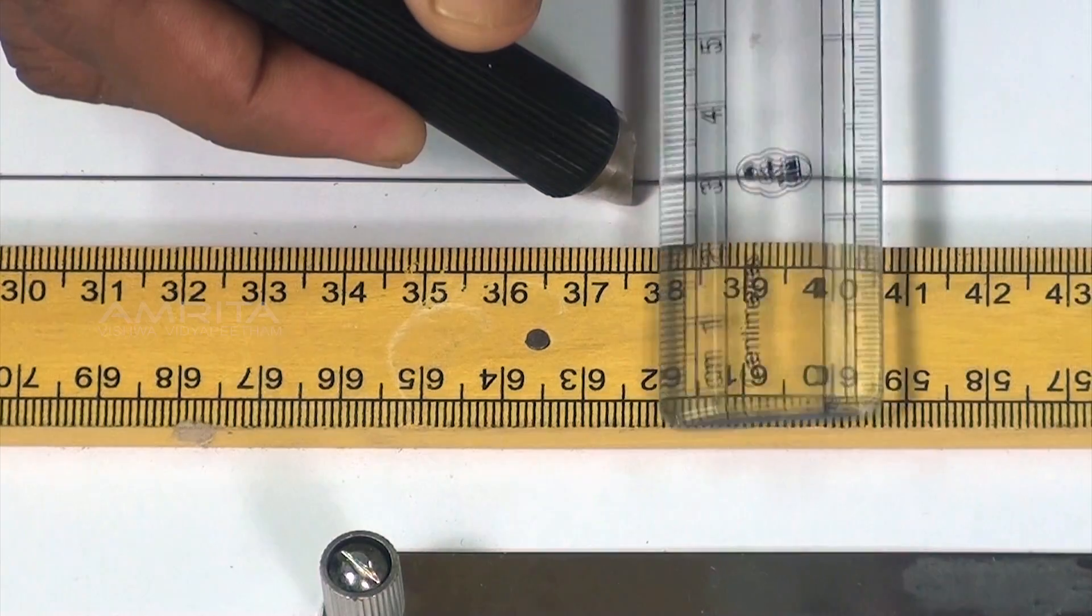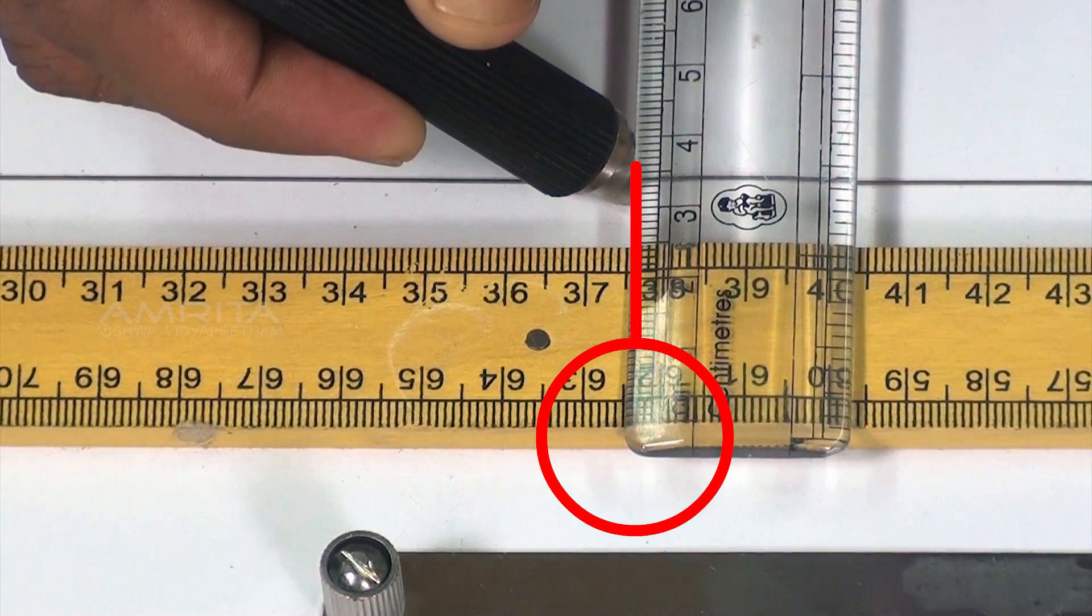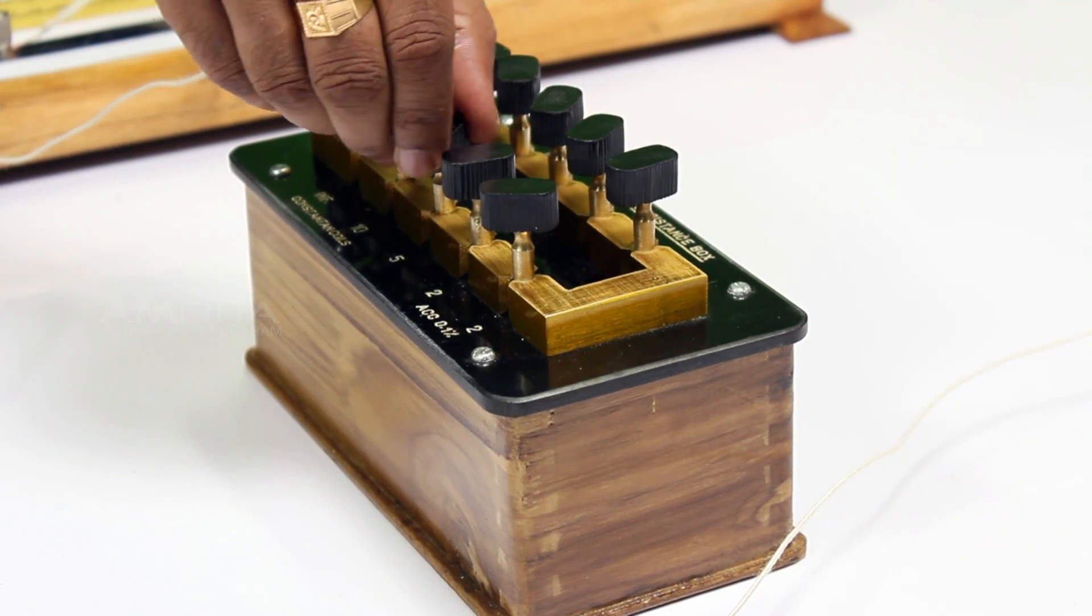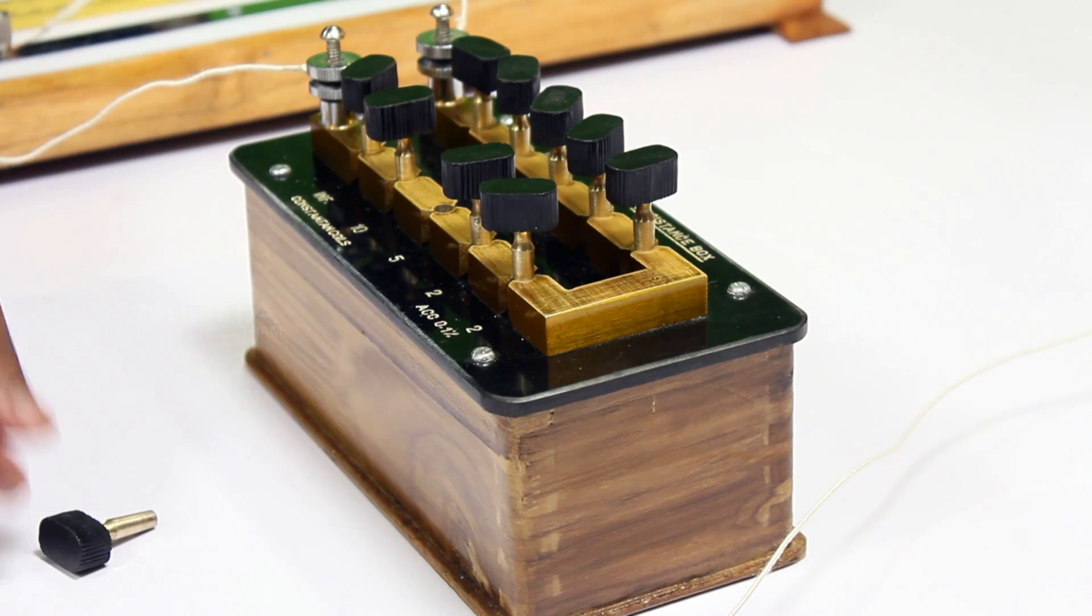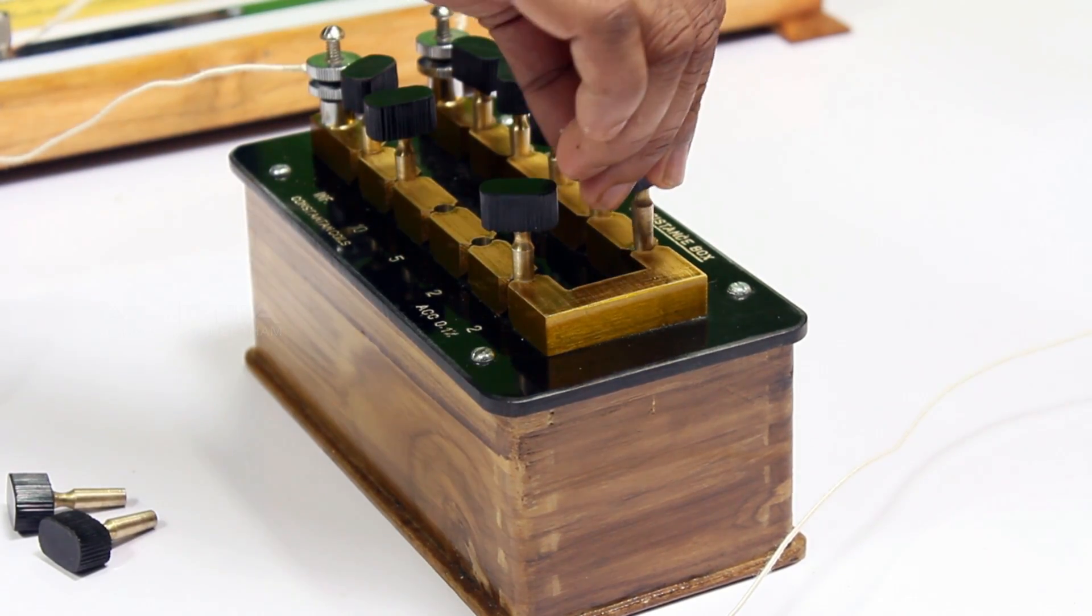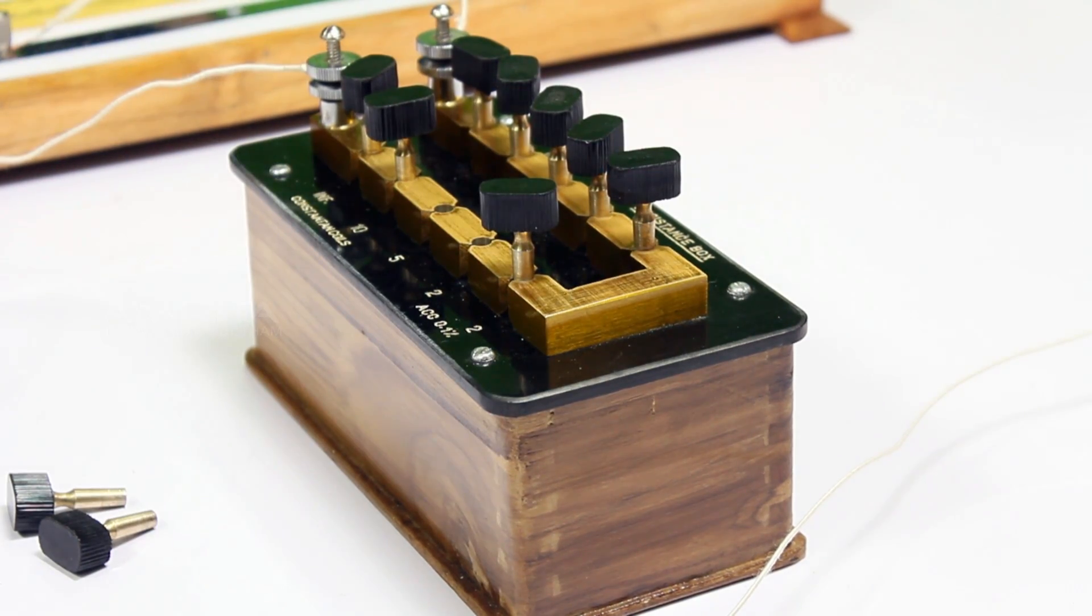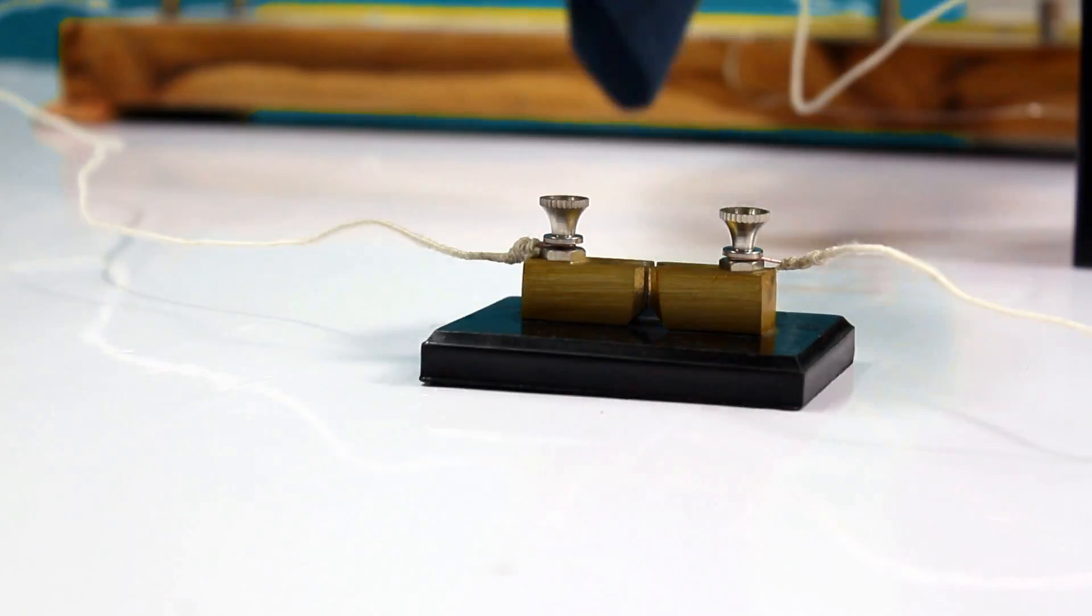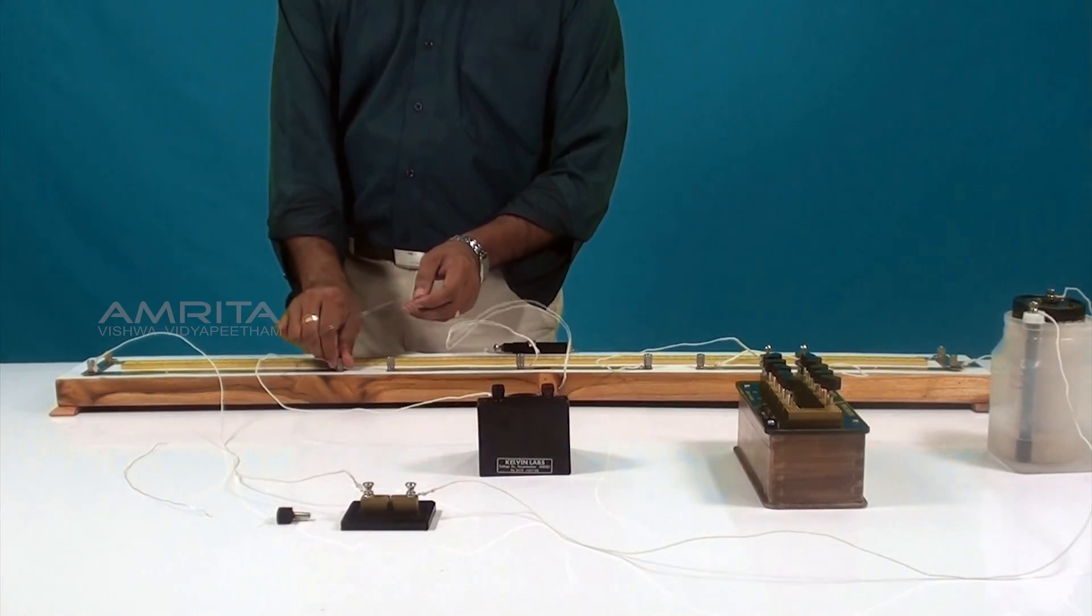Similarly, measure the balancing length and unknown resistance for another four nearby values of resistance R. Then, take the mean of these resistance values which will be R1. After taking these measurements, remove the key and then the resistance wire R1.